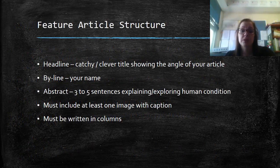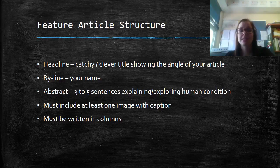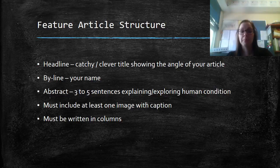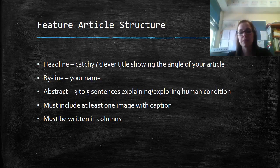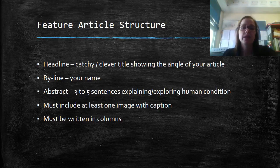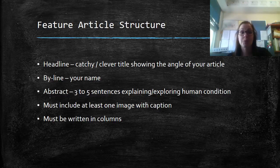By now you should be quite familiar with the structure. We need a headline that's catchy and clever, a title showing the angle of your article, a byline which has your name, an abstract which is three to five sentences explaining or exploring the human condition. Your byline can go at the end of that abstract just like the example did. You need to include an image with a caption, remembering that we're not actually drawing that image, just a box showing where it would be, and you need to write in two columns.